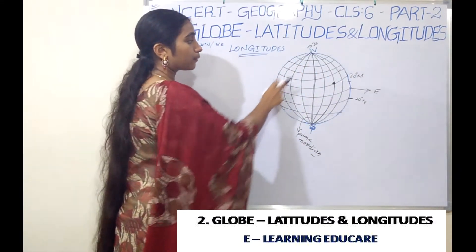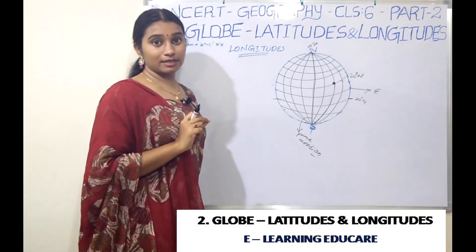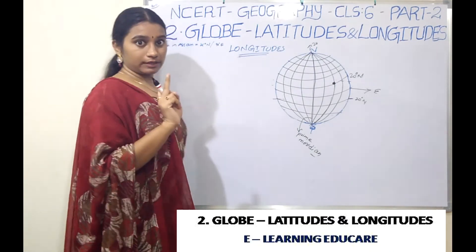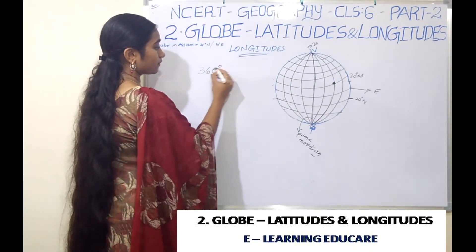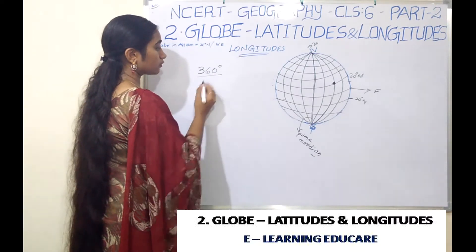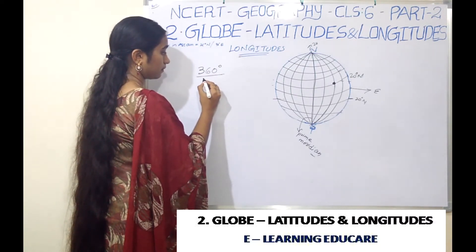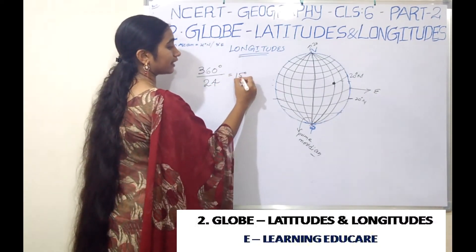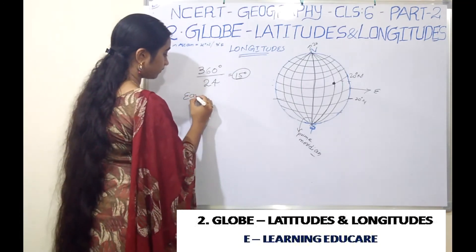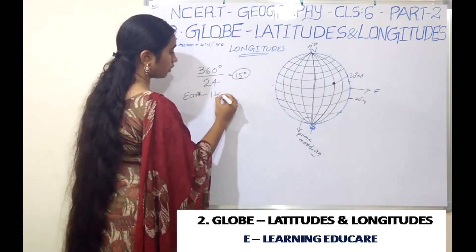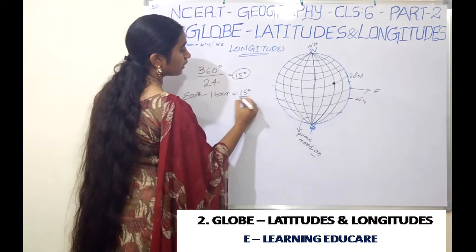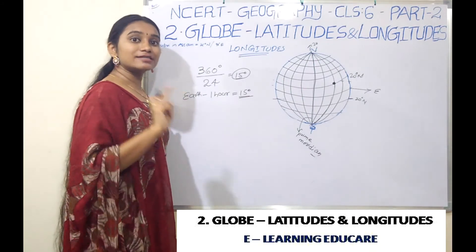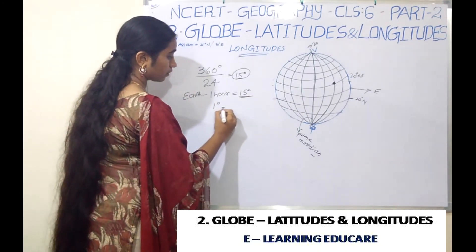Now about longitudes. The Earth rotates 360 degrees in 24 hours. So it rotates 15 degrees per hour. That means 1 degree equals 4 minutes of time.